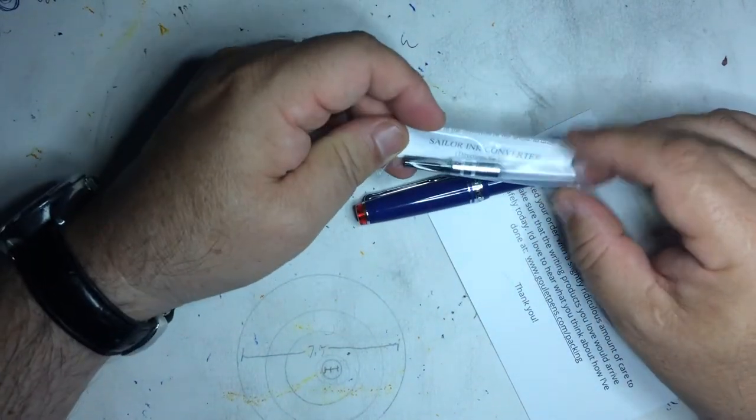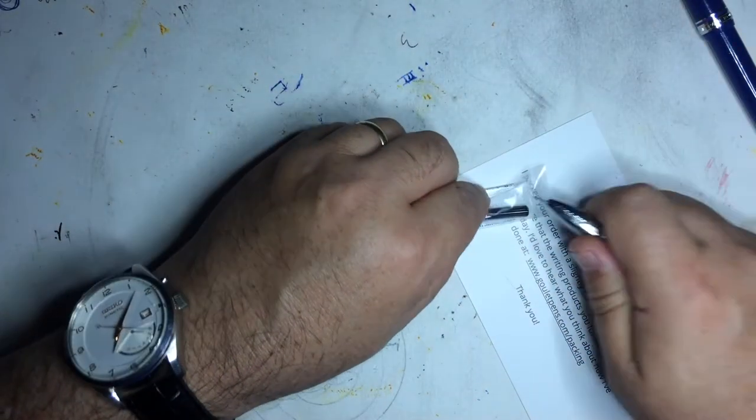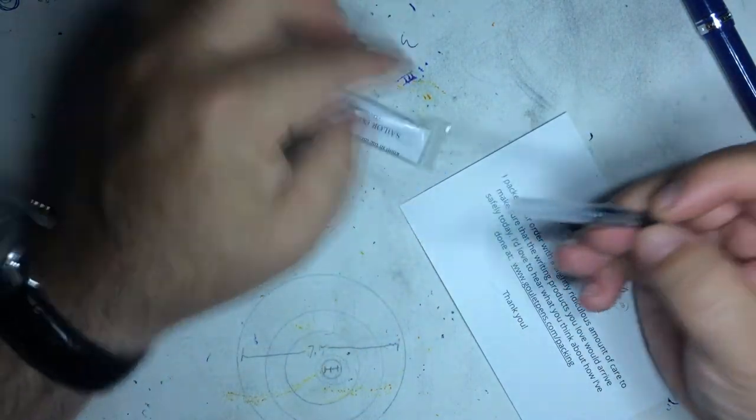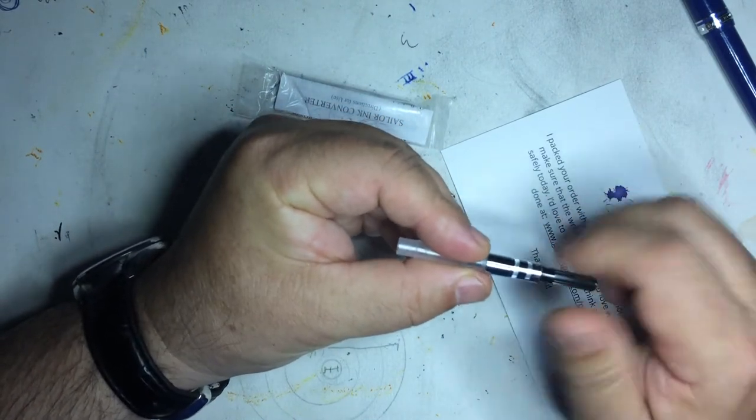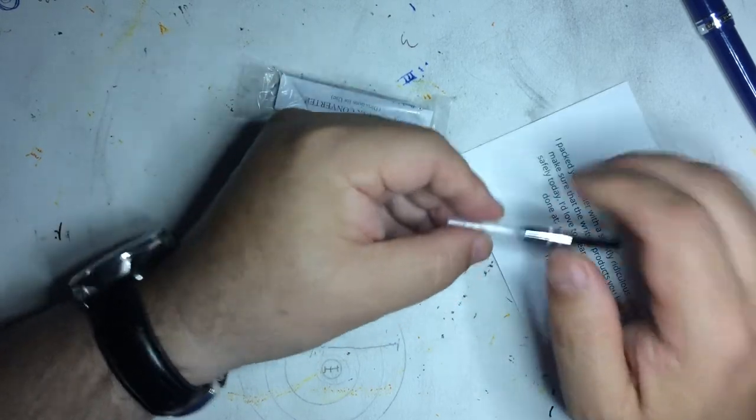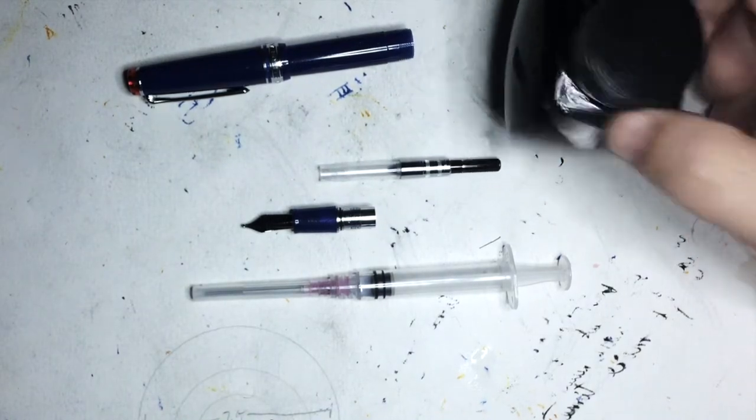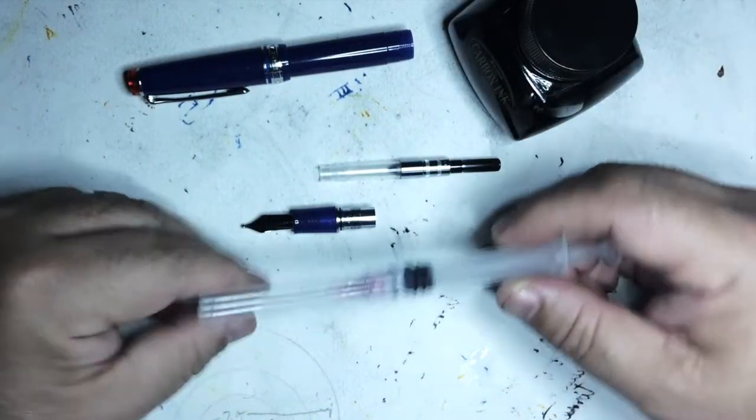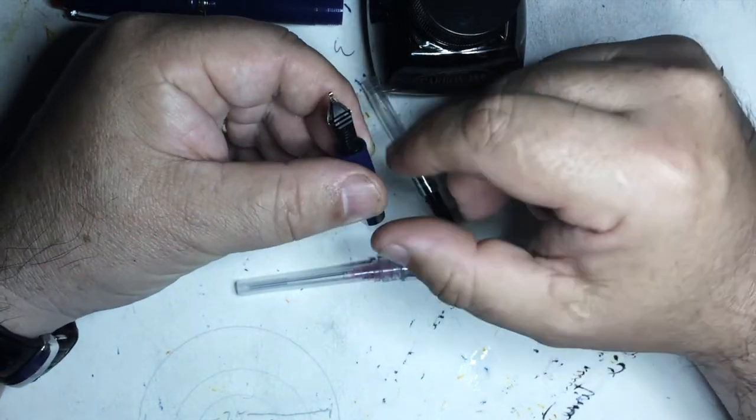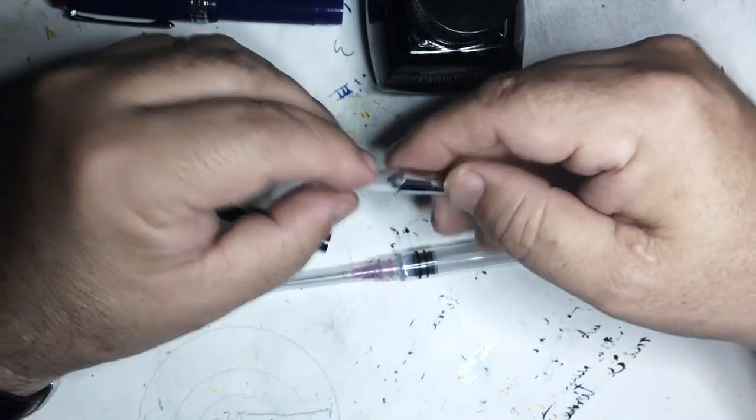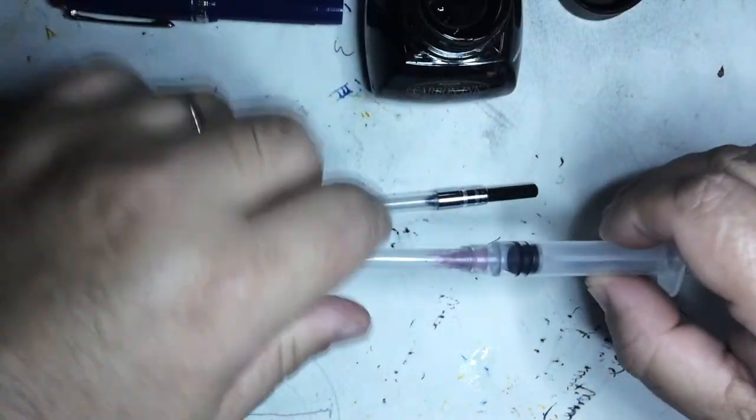Let's sync this up and we'll pop in this converter. This is the standard converter, it's not an international converter. Sailor has proprietary converters that they use. Let's fill it with this carbon ink. I am going to attempt to use my syringe to fill it. You always want to clean a new nib, so I didn't disassemble it but I did rinse it out to make sure there won't be any residues inside from having manufactured or storing the pen.